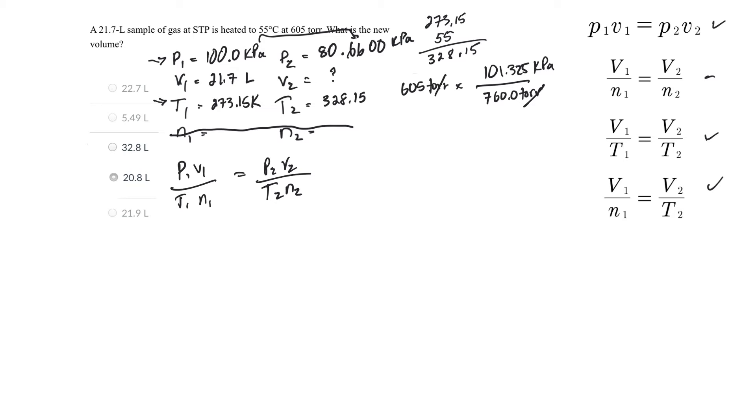Okay, but now the moles aren't changing. So I don't have to use those moles in my formula. Let me take them out. So I'm looking for V2 and V2 is right there. So my formula will be V2 is equal to P1V1 T2 divided by T1P2.